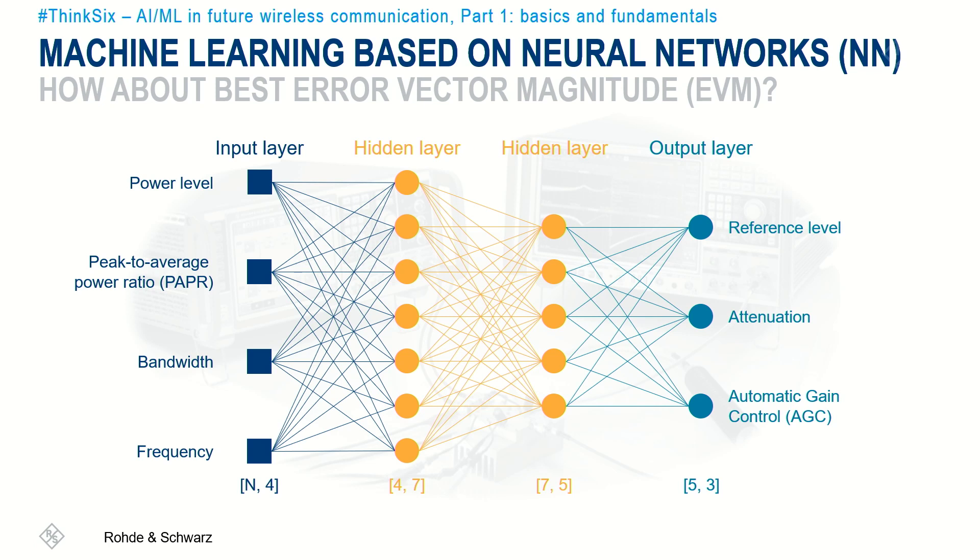As we all know, 5G is very flexible in terms of numerology, bandwidth options, and modulation schemes. On top of that, there are numerous configurations of reference signals for different purposes, leading to minor or more considerable variations — for example in terms of the peak-to-average power ratio of the waveform. Test equipment can help generate these datasets and use them for training a model to predict the best settings for the signal generator and spectrum analyzer. New and eventually unknown waveforms, ultimately standardized for 6G, would serve as validation data to test the model's accuracy.